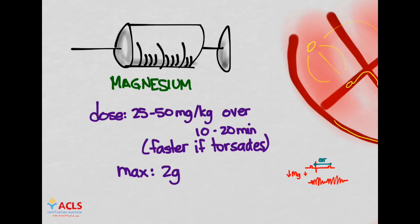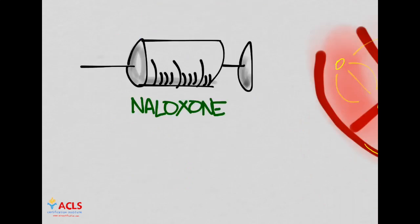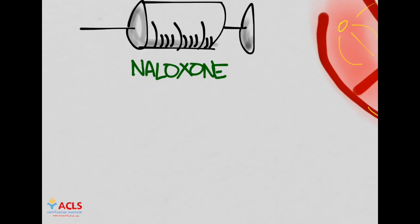The next medication is naloxone, an opiate antagonist. It's usually not included in ACLS as one of its core medications, but respiratory depression is one of the main side effects of narcotic medications. Respiratory depression can cause cardiac arrest in pediatric patients. If you suspect an opiate overdose, consider naloxone.